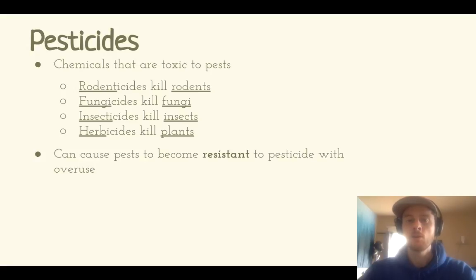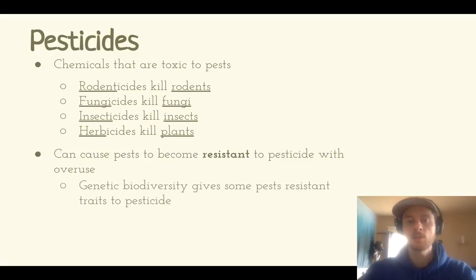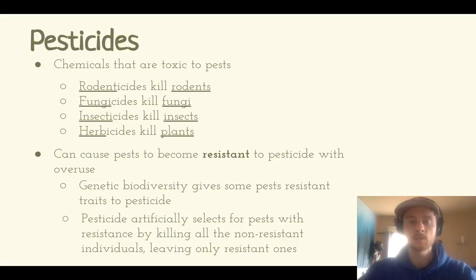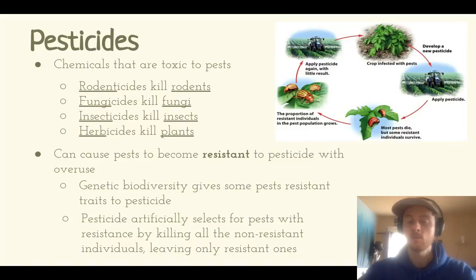Over time, overuse of pesticides can cause pests to evolve resistance. Because there is genetic diversity in pest populations, some naturally have genetic mutations that allow them to survive the pesticide. Pesticide use will artificially select for resistant genes — killing organisms without resistance, but leaving behind only those that do have it. Over time, the entire population evolves genetic resistance to that pesticide.